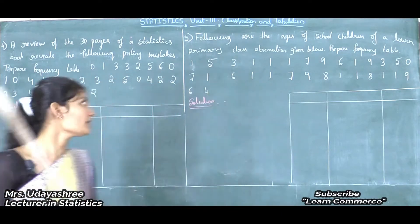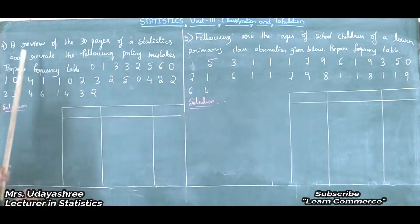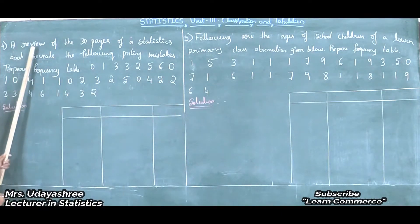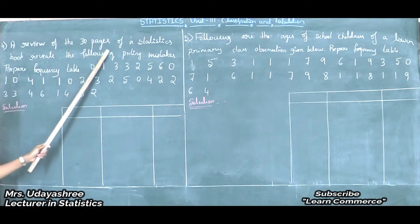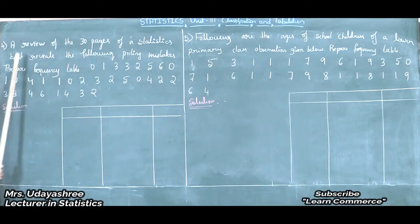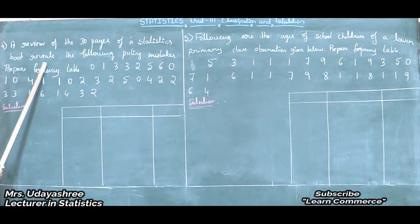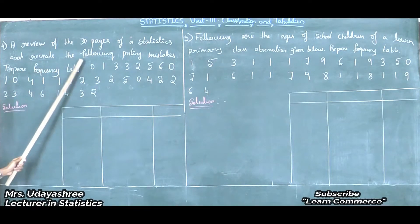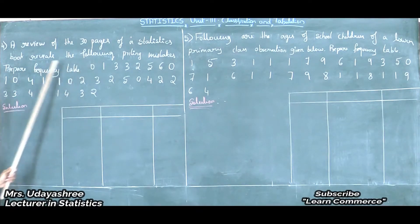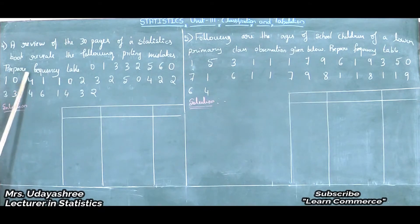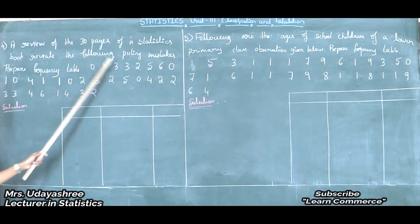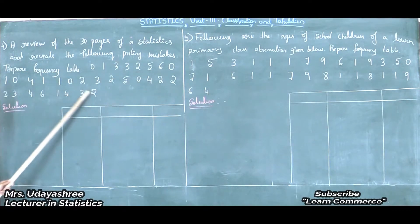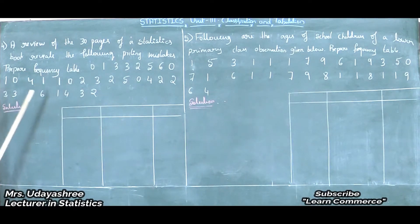Problem number 4: A review of 30 pages of a statistics book reveals the following printing mistakes. Some observations are given. Let us see the solution part.